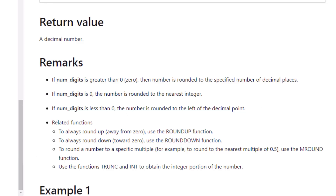If we scroll down the page we have some remarks. If numdigits is greater than zero then the number is rounded to the specified number of decimal places. If numdigits is zero the number is rounded to the nearest integer. So let's turn to Power BI and see some of this in practice.